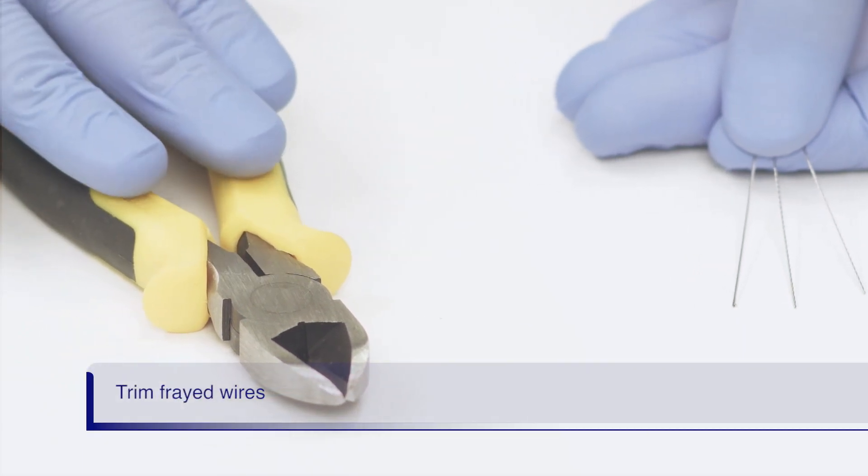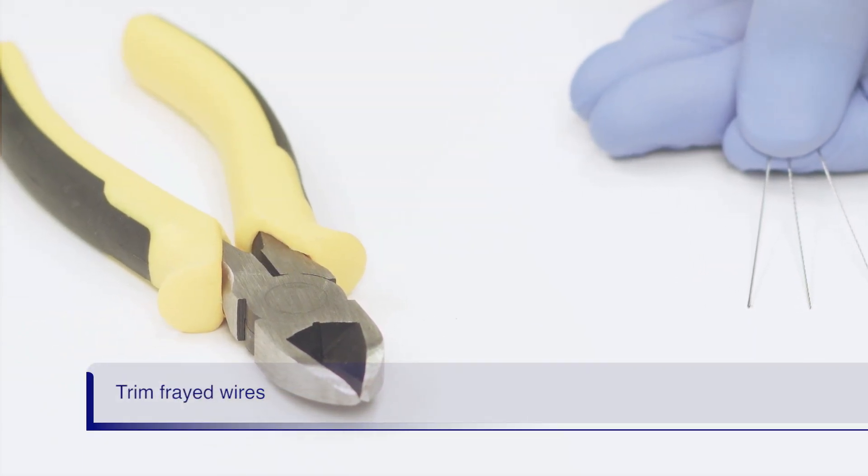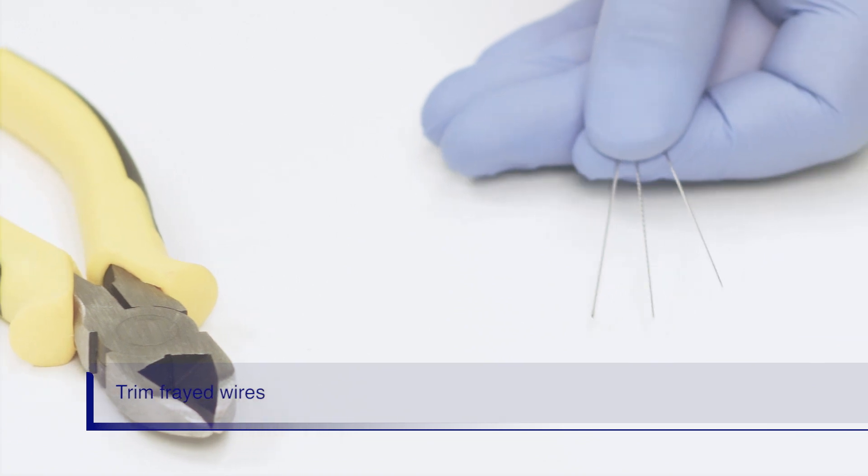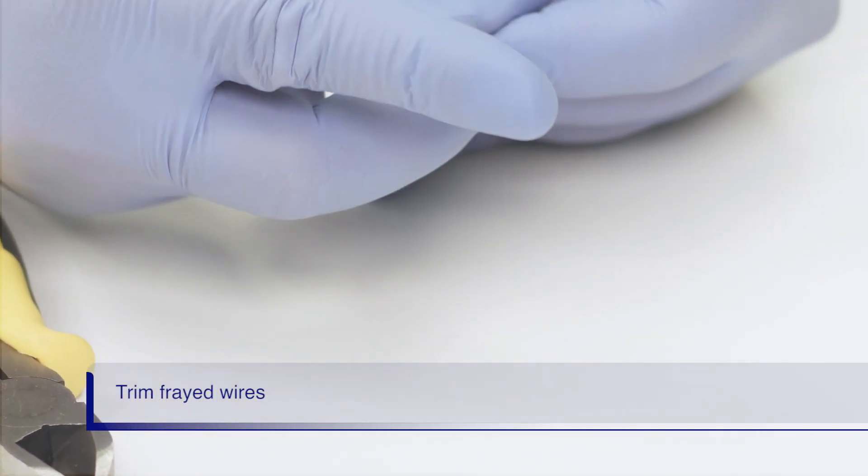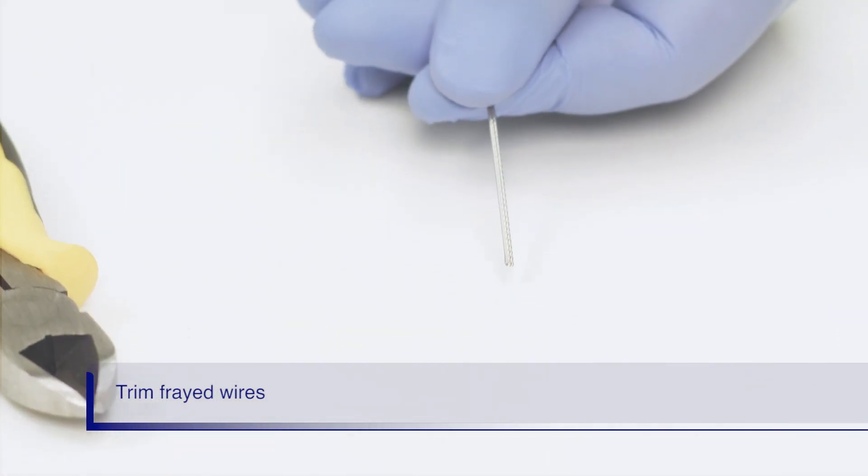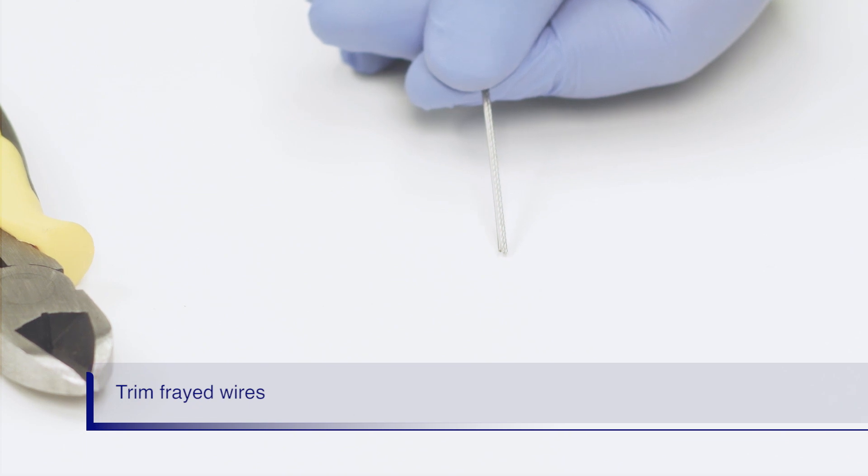Trim any frayed wire ends with the wire cutters. Frayed ends will not smoothly pass through the emergency lithotriptor coil sheath. The wire ends in this demo are smooth and do not need to be trimmed.